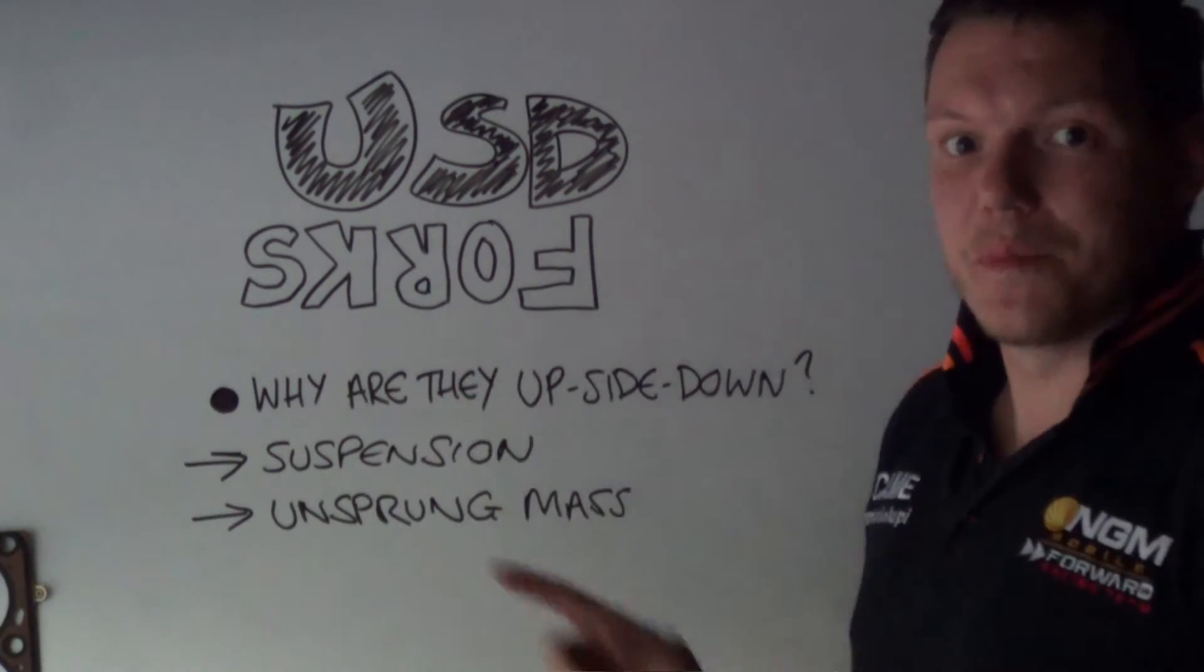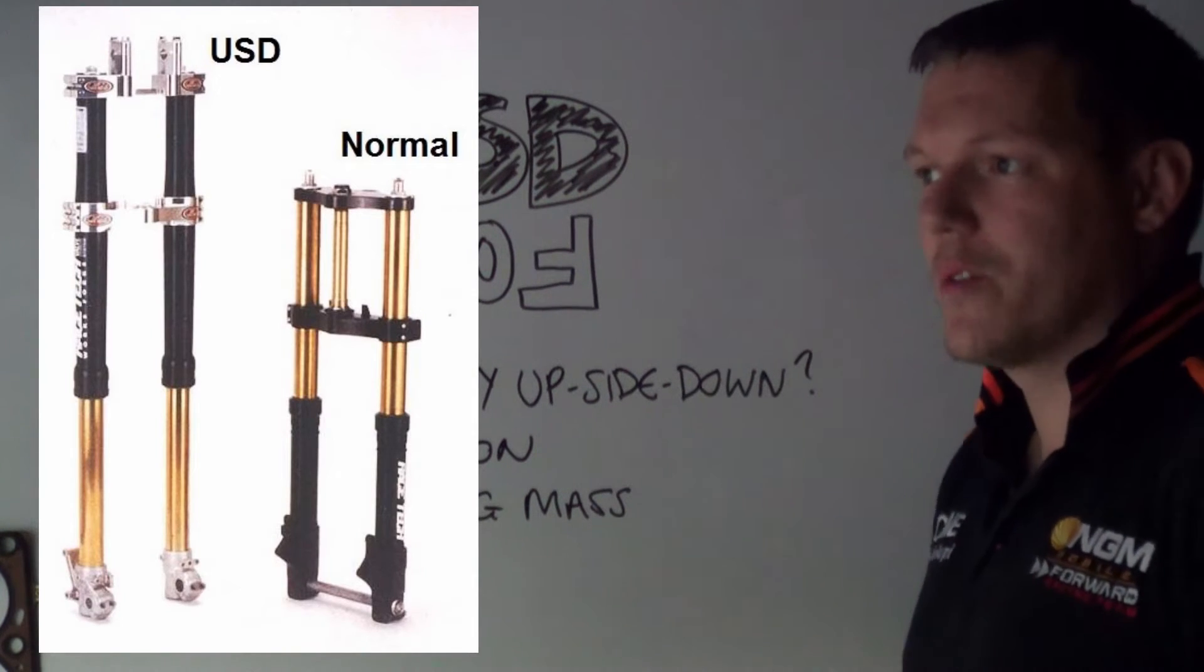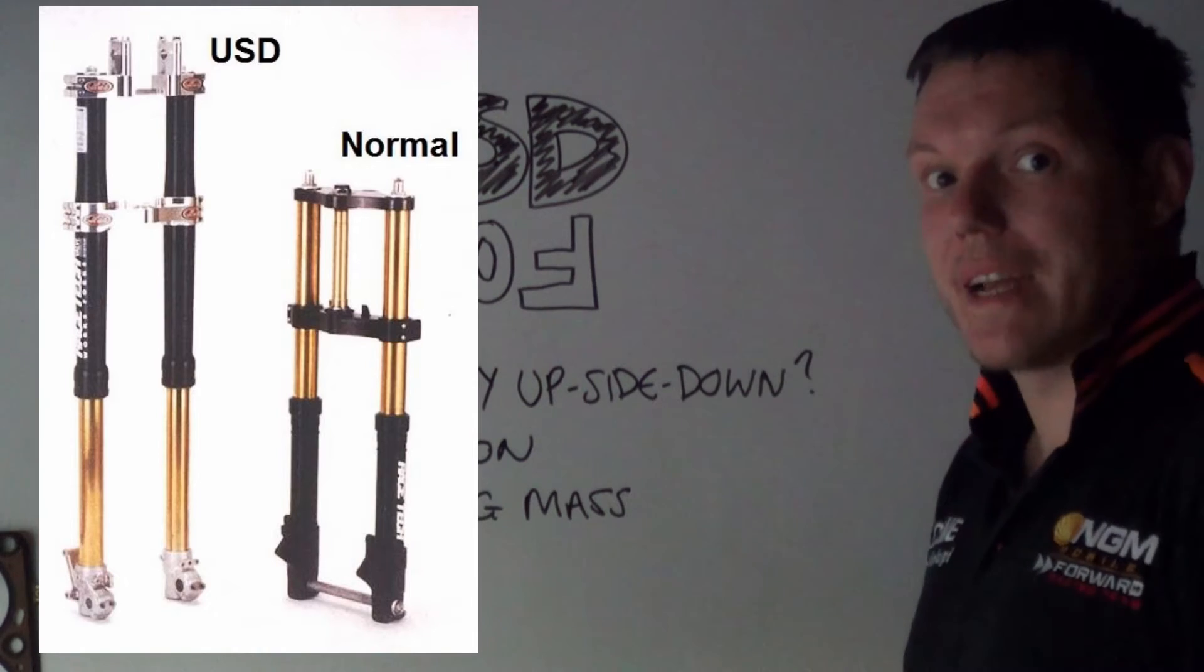To understand why they are upside down, I've got a picture right now. You can see there's some conventional shocks as we call them, and then we've got some USD, some upside down forks.